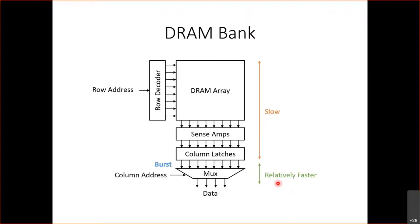A student noted that the decoder can't be made arbitrarily large because it becomes too slow. That's exactly why this is just one DRAM bank — the DRAM array won't have four gigabytes worth of rows. It will have a small amount, and there will be multiple DRAM banks — more on that later.